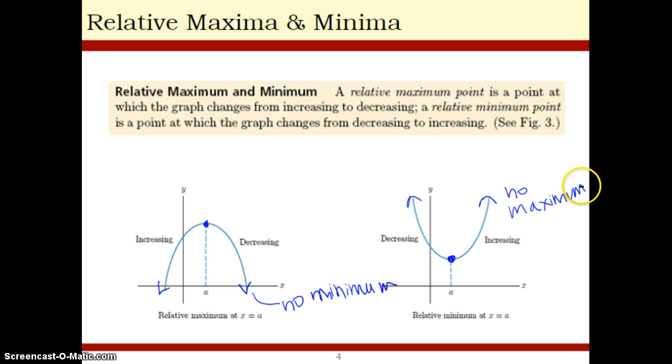Because, in this case, the minimum is negative infinity, which is not a number. In this case, the maximum would be positive infinity, again, which is not a number. So, this first graph only has a maximum. Second graph only has a minimum.